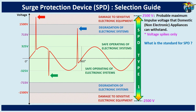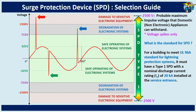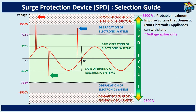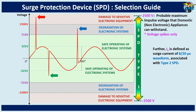What is the standard for an SPD? For a building to meet UL96A standard for lightning protection systems, it must have a type 1 SPD with a nominal discharge current rating of 20k installed at the service entrance. Further, IN is defined as surge current at a 8/20 microsecond waveform, associated with type 2 SPD.